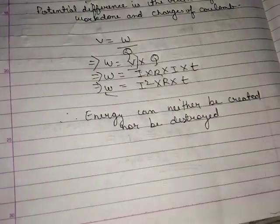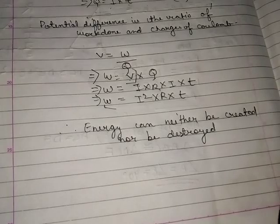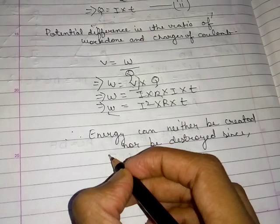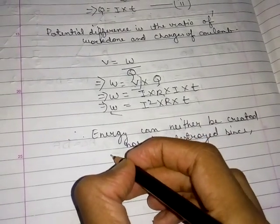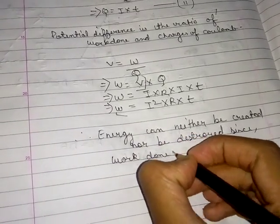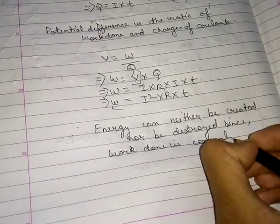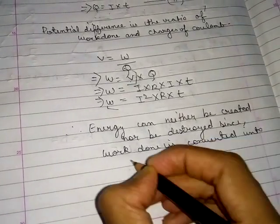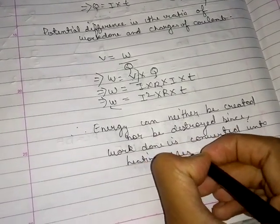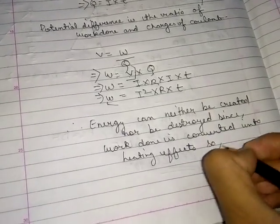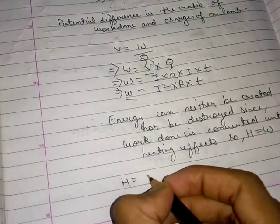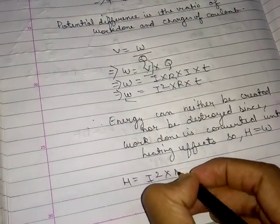Since work done is converted into heating effect, H equals W. Therefore, H equals I squared into R into T.